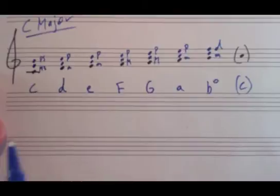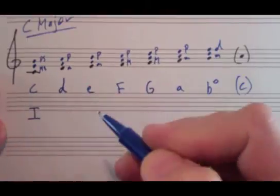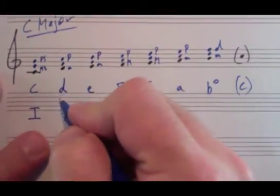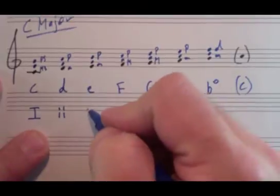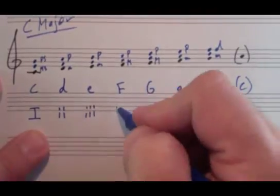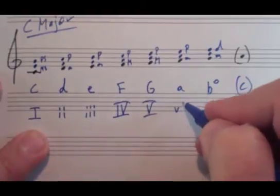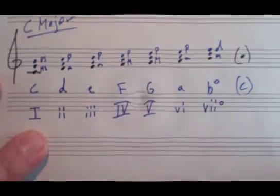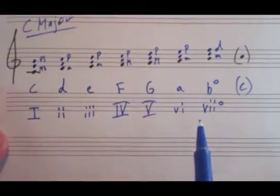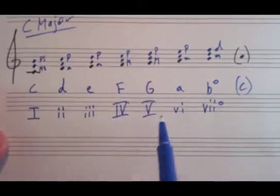When we refer to these, we can give each of these Roman numerals. For major triads, we use capital Roman numerals. So one is capital I. For minor triads, we use lowercase, so it's going to be ii, iii, major IV, major V, minor vi, diminished vii. Now we've given each degree of the scale a chord name as well as a Roman numeral identification that indicates the quality.